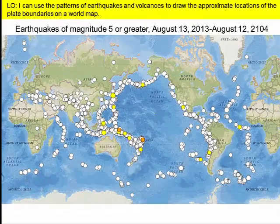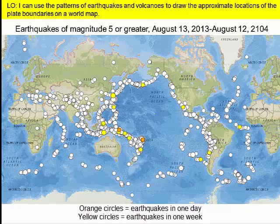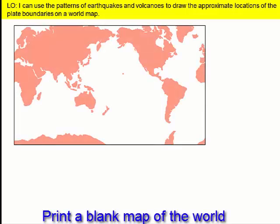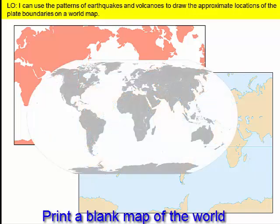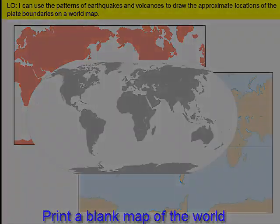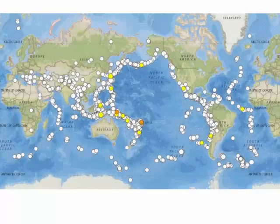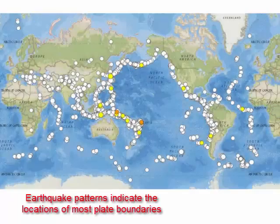Before we sketch the locations of plate boundaries on our map, let's first look at the distribution of some recent moderate to large earthquakes. This map shows the locations of more than 1,600 earthquakes of magnitude 5 or greater that occurred in one year. Now, get yourself a blank map of the world — if you don't have one handy, pause the lesson and search online to find one. Now that you're armed with your map, let's find some plate boundaries using these earthquake locations.